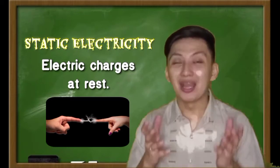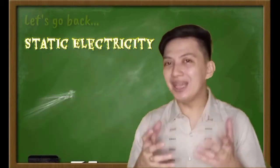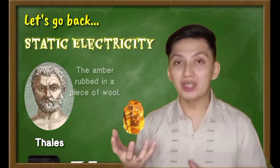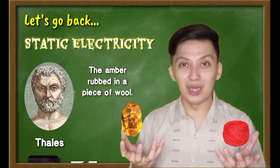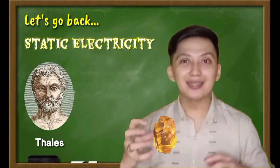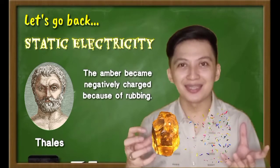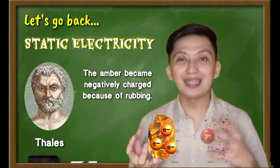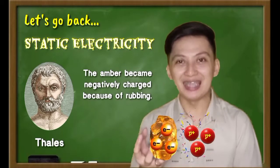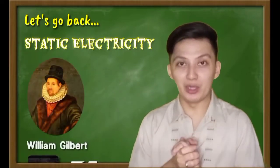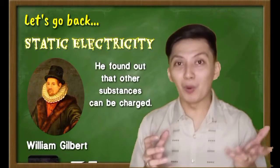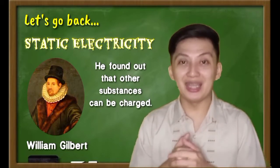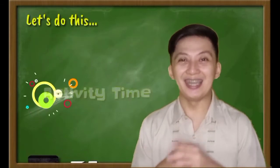Maybe you are already familiar with it, but you do not know how to call it. Based on history, it was discovered by Thales when he accidentally rubbed an amber, which is a fossilized sap, to a piece of wool, and suddenly the amber attracted small and light pieces of things. It is not magic, but because the amber becomes negatively charged, it attracts some light and small things. William Gilbert also discovered that it is not only amber but all matter and substances that can become negatively charged and attract lightest and smallest things.